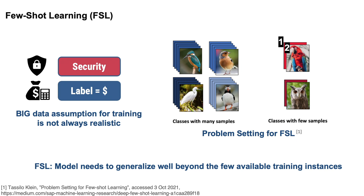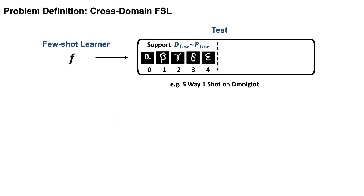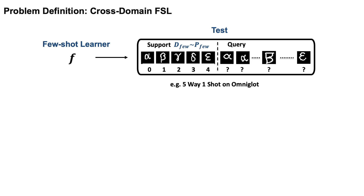The few-shot setting requires models to generalize well beyond the few available training instances. The particular few-shot problem we are looking at here is called cross-domain few-shot learning, which is the most difficult and general variant of few-shot learning. We want a few-shot learning app that can take a very small sample from a certain distribution and learn to classify future samples from that distribution.